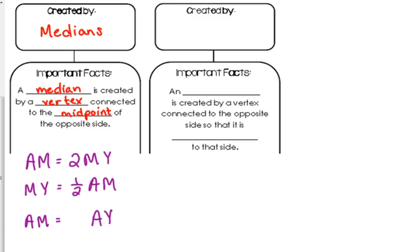So if we want to say AM is a certain proportion of the whole side, AY, what do y'all think it is? AM is what proportion of the entire median, AY? If it's twice as long as the shorter piece, any ideas? Two thirds? Two thirds.